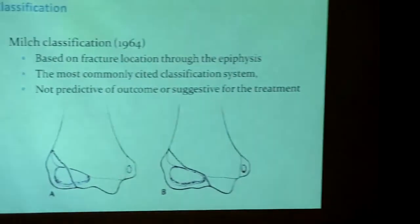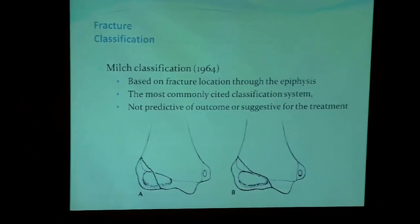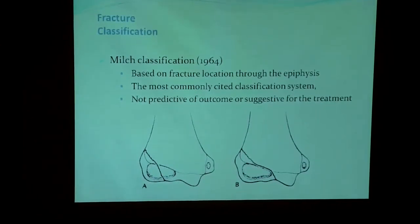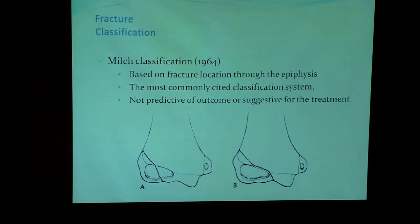The problem we usually face is the classification of this fracture and deciding which ones are to be treated surgically or not. One of the well-known classifications of lateral condyle fracture in children is the Melch classification, designed in 1964. It is based on the fracture location through the epiphysis, but unfortunately it is not predictive at all for outcome or suggestive of treatment. However, it is the most cited classification system in the literature.